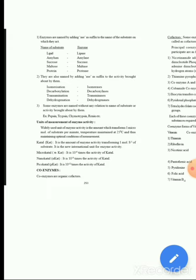Different activities that enzymes perform include hydrolysis, giving hydrolase; isomerization, giving isomerase; and transamination, giving transaminase. Some enzymes are named without reference to their substrate or activity. It is not necessary that enzyme names follow the same basis — some enzymes like pepsin are named without relation to substrate or activity.